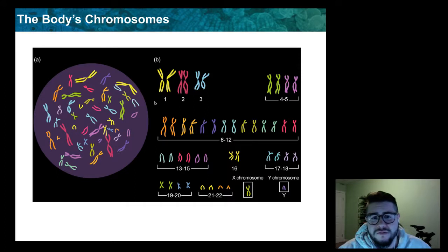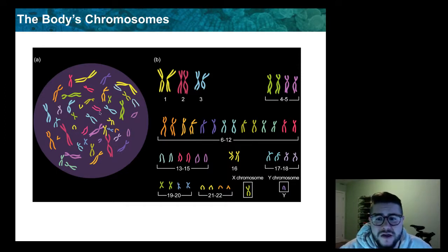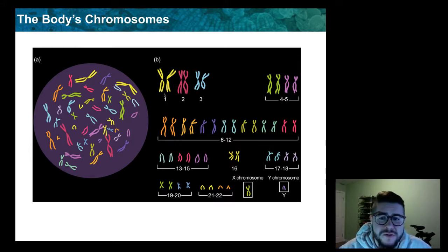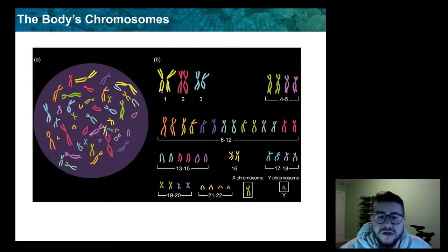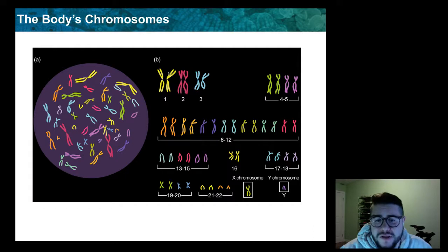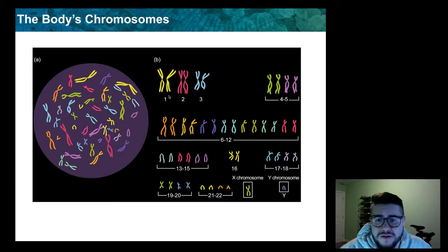So let's start here with the body's chromosomes. Here are all the chromosomes in a cell. There are 23 pairs of homologous chromosomes. The best way to describe them: here's one from mom, one from dad. There's one from each parent, and these are both for chromosome one. So there'll be one set of genes from mom, one set of genes from dad. These are your homologous chromosome pairs.